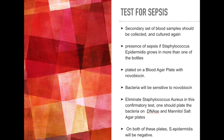To confirm the diagnosis for sepsis, a secondary set of blood samples should be collected and cultured again. The observed result will indicate the presence of sepsis if Staphylococcus epidermidis grows in more than one of the bottles. On the other hand, if there is little to no growth like seen in the original blood sample, sepsis can be deemed not present and the growth in the original sample can be attributed to contamination by skin commensals. The newly taken sample should also be plated on a blood agar plate with the antibiotic novobiocin; if Staphylococcus epidermidis is present, opaque one to two millimetre colonies will grow and the bacteria will be sensitive to the antibiotic.